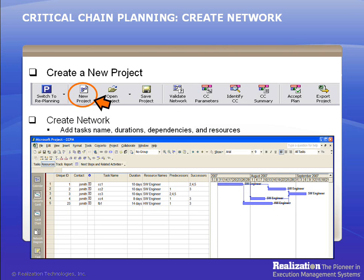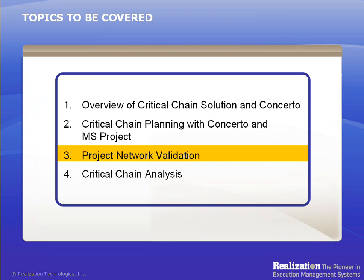Select the Planning Toolbar to create a new project, then click on the New Project icon. Or you can open a pre-existing project and convert it to a Concerto Critical Chain Project Network. To do this, click the Open icon, then browse to and select the existing project and click Open. After you've created your project network in Microsoft Project, the next step is to validate it to ensure there are no errors or non-conforming settings.